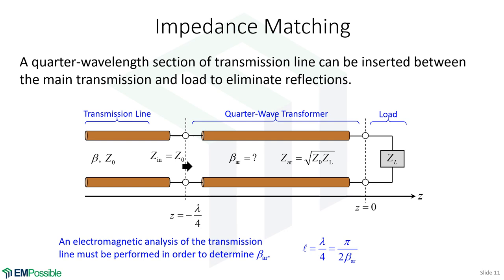For impedance matching, let's say we have a transmission line we want to hook up to a load but there is a reflection because the two don't match. We can insert another transmission line that has a different impedance — specifically, we make it a quarter wavelength long. If we do that, it turns out we will match our transmission line to the load and prevent reflections. But to design this, we have to know what a quarter wavelength is, and to determine that we must analyze the line to get our transmission line parameters. The code you are going to write is going to let us do things like this. This is not an electromagnetics class — we're just doing the analysis so you can see why it's needed.